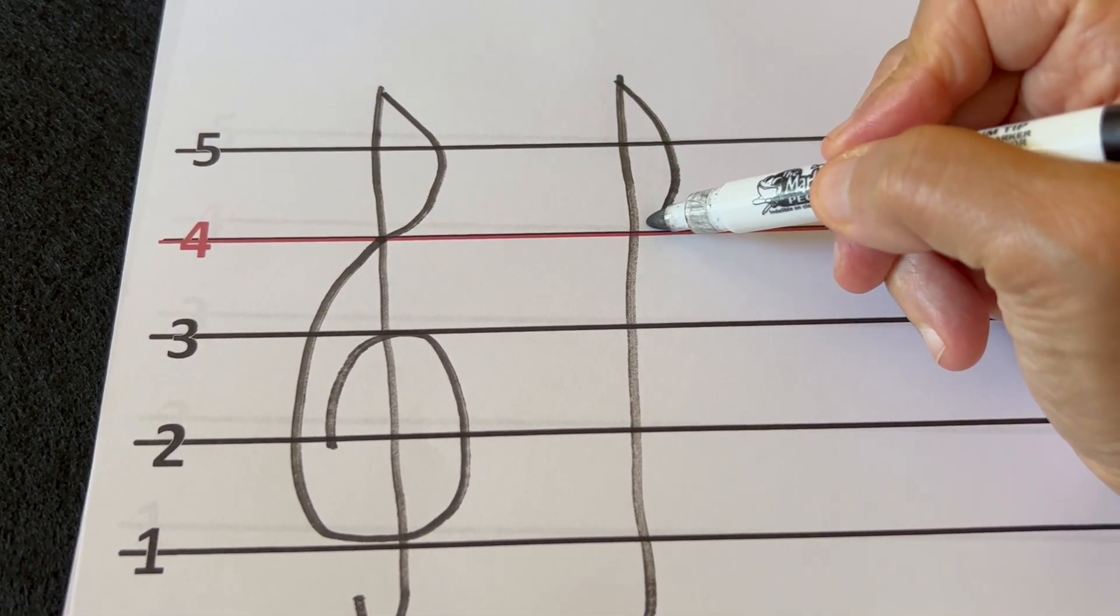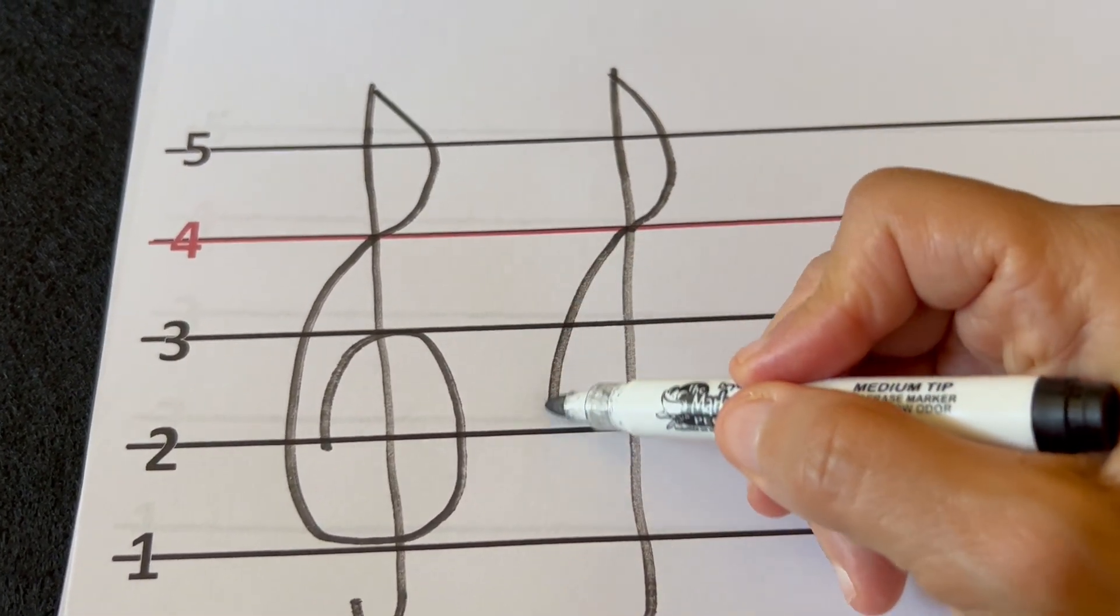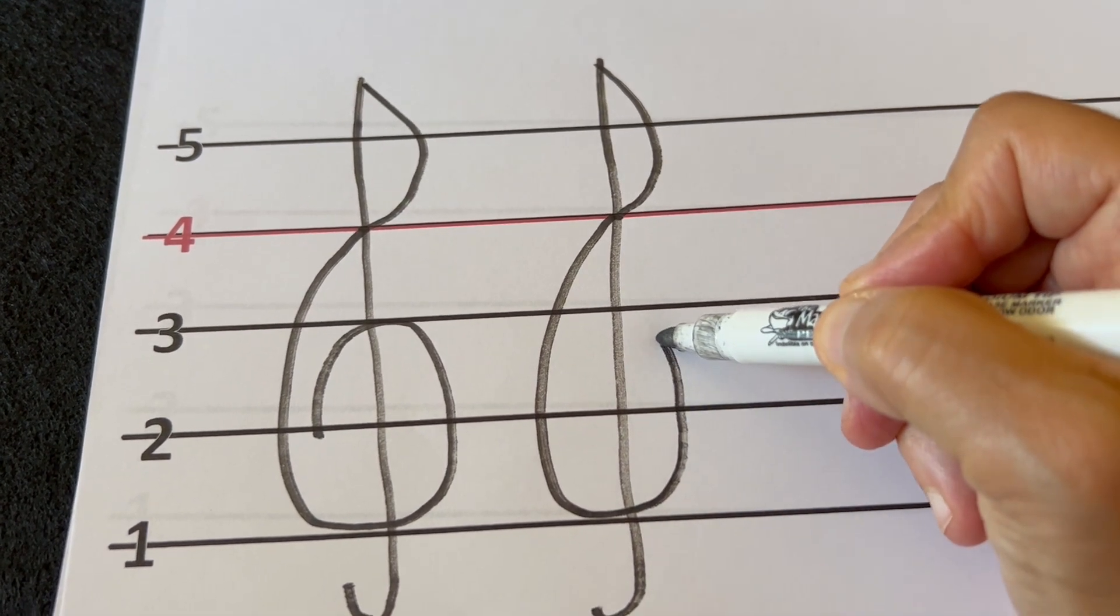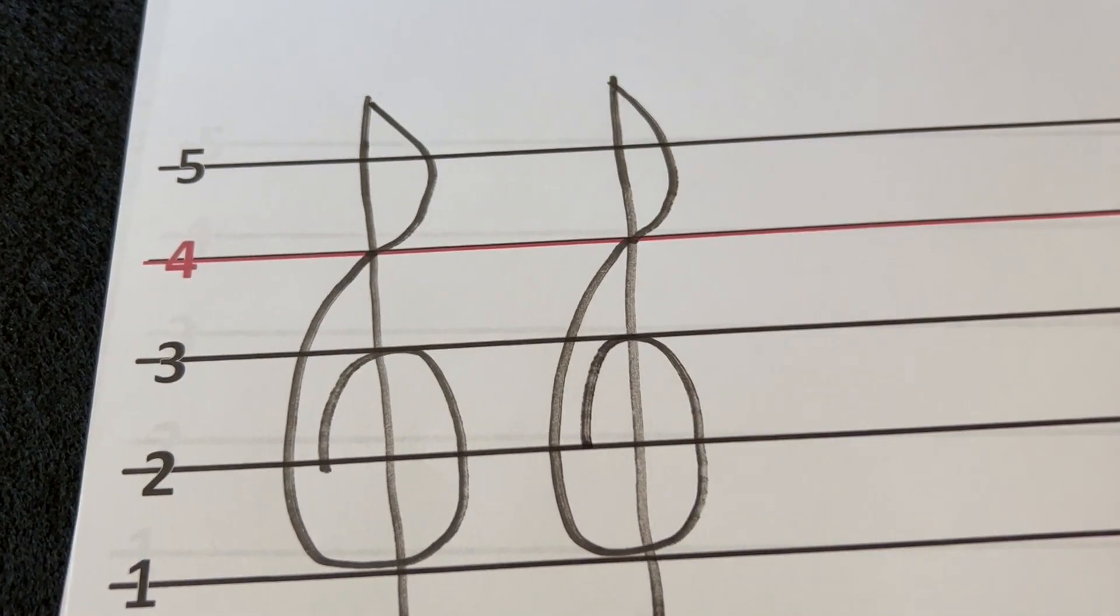We start with the letter D that stops at line four. And then we make the number six which goes to the first line, goes all the way up to the third line, and then we cross over the third line and we end with number two.